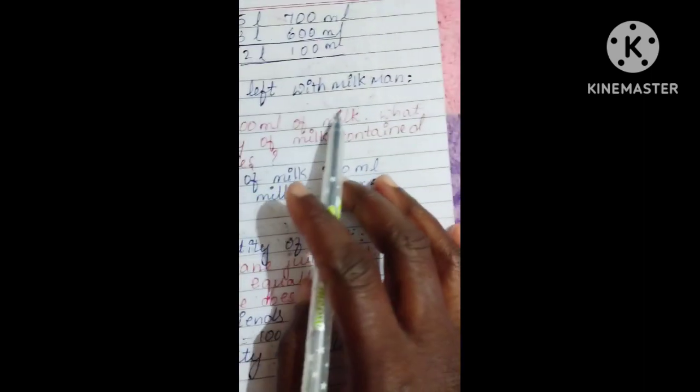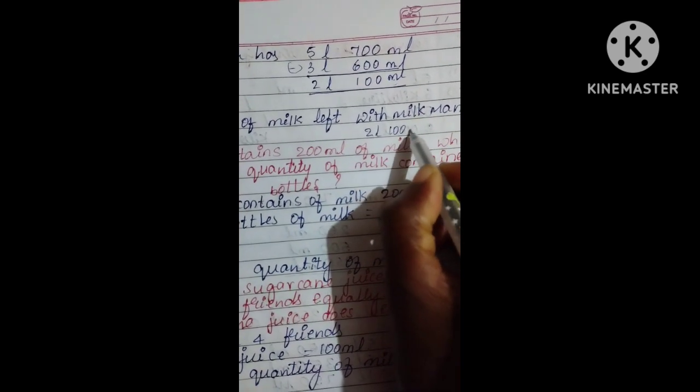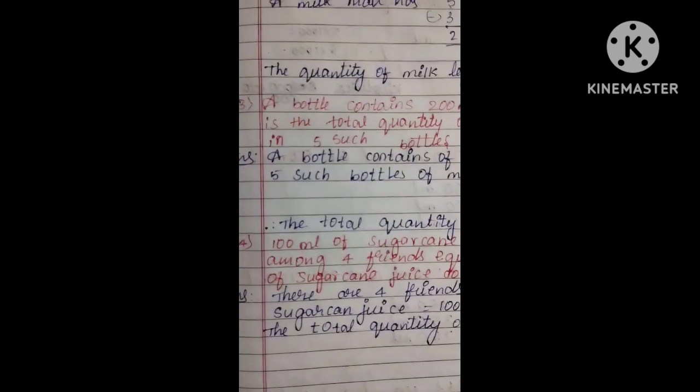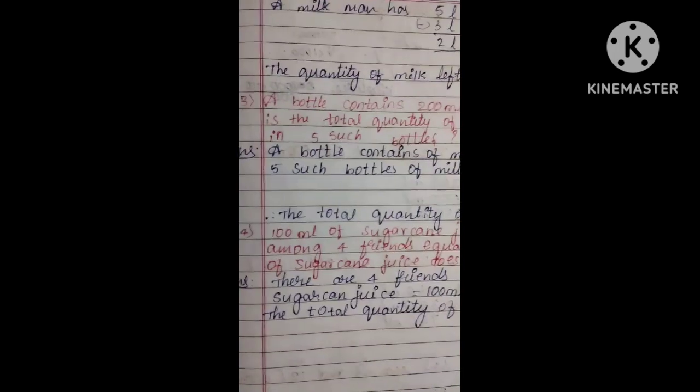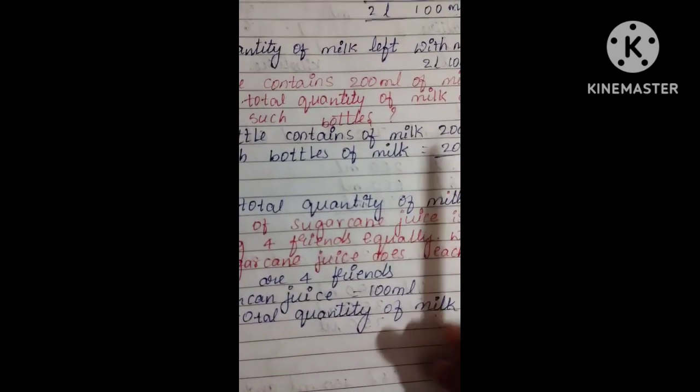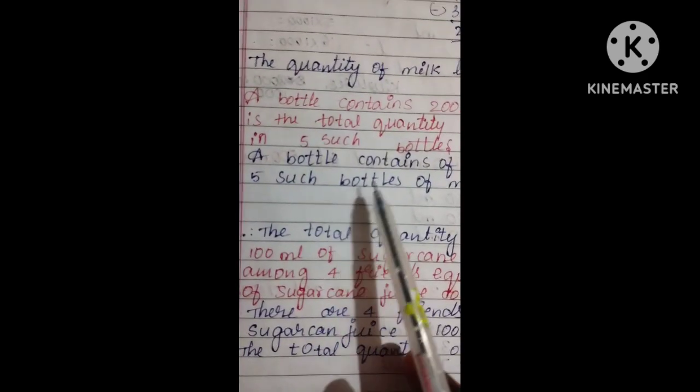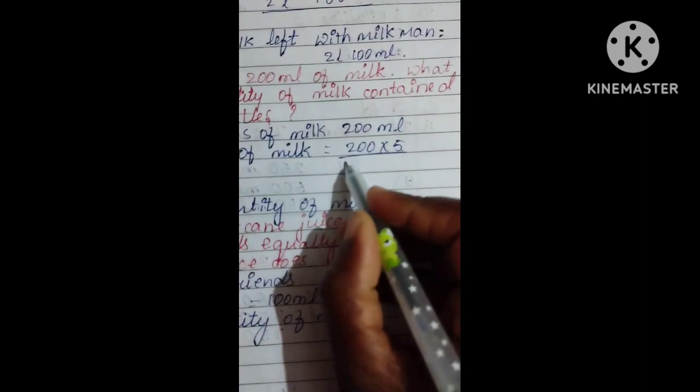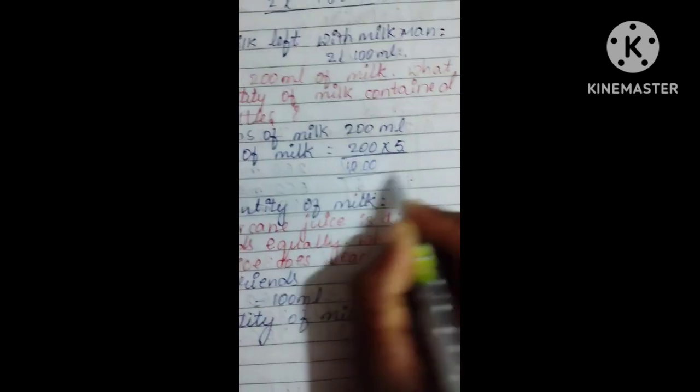Next question. A bottle contains 200 ml of milk. What is the total quantity of milk contained in five such bottles? 200 into 5 equals 1000 milliliters or 1 liter.